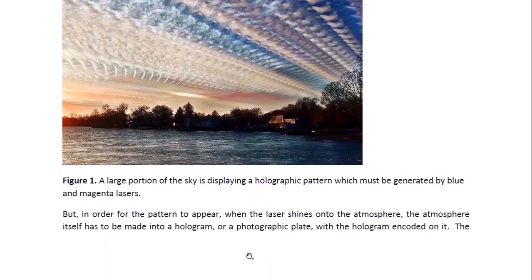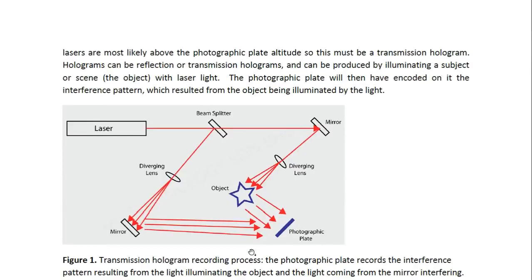But in order for the pattern to appear when the laser shines onto the atmosphere, the atmosphere itself has to be made into a hologram or photographic plate with the hologram encoded on it. The lasers are most likely above the photographic plate altitude so this must be a transmission hologram.